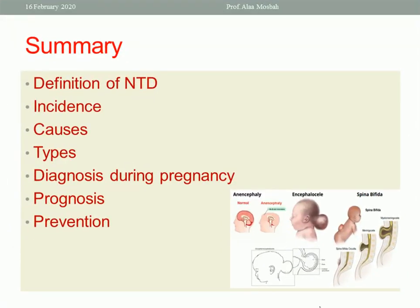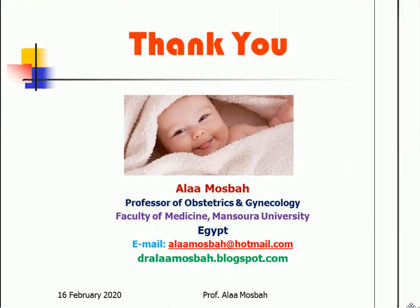In summary, we covered today the definition of neural tube defect, its incidence of about 1 in 1,300 pregnancies, its causes, its types, and diagnosis during pregnancy using ultrasound, serum alpha-fetoprotein, and amniotic fluid alpha-fetoprotein levels. We also covered prognosis and prevention — by folic acid supplementation and avoiding risk factors including control of diabetes. This is the end of the lecture. Thank you.